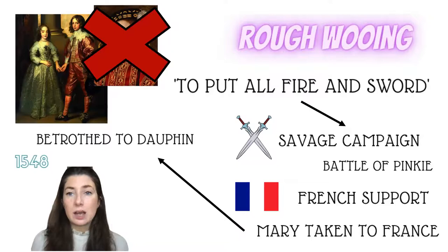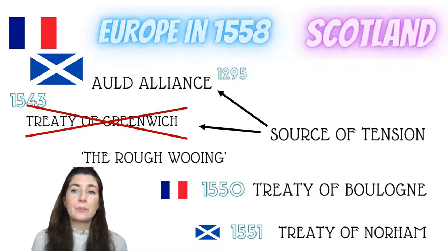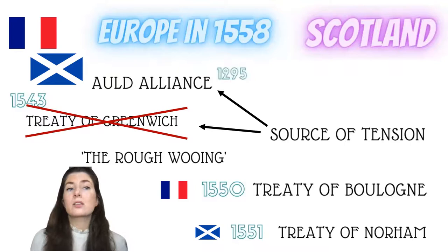In 1550 we get the Treaty of Boulogne between France and England, which ended those hostilities and insinuated that Scotland and England were also at peace. They formally signed the Treaty of Norham in 1551 under Dudley, Earl of Northumberland, and the English at that point abandoned their holdings in Scotland and the border reverted to the original line. So all of this tension under Henry and Edward leads to kind of nothing really, because we've gone back to that original line.